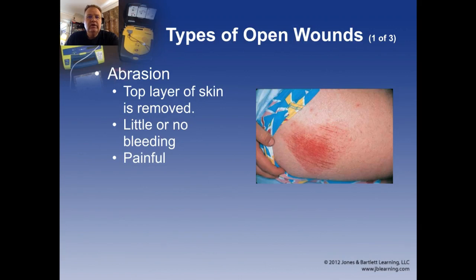There are different types of open wounds. The most simple is an abrasion — your basic skinned knee. You fall down and take off the very top layer of skin. They don't tend to bleed a lot, although they can ooze a little bit. They're very painful because you have nerve endings that go right into that top layer of skin, and when you take that layer off, the nerve endings get exposed to the air and are very uncomfortable.